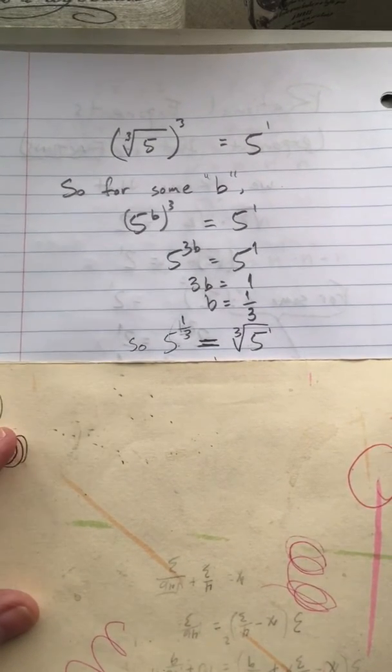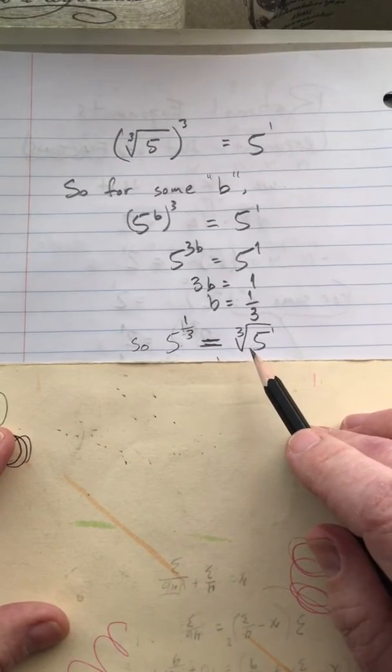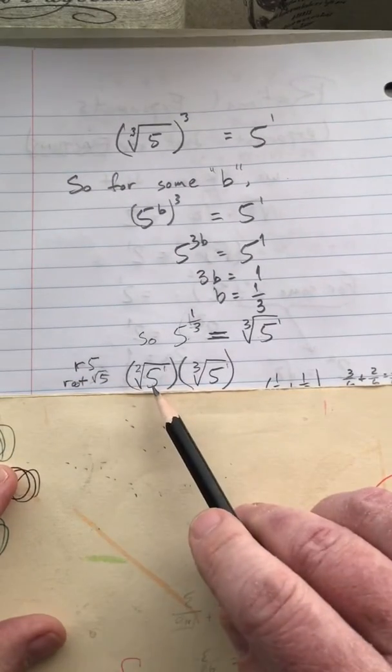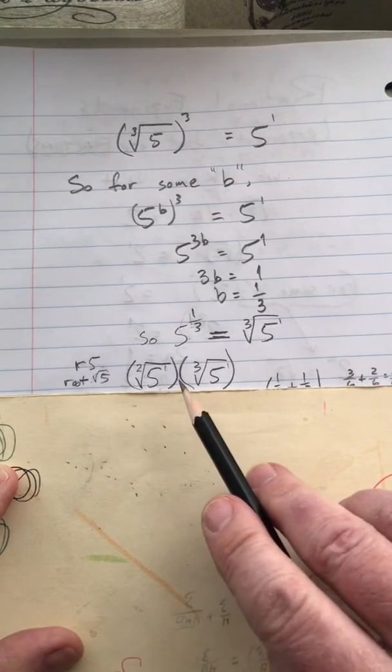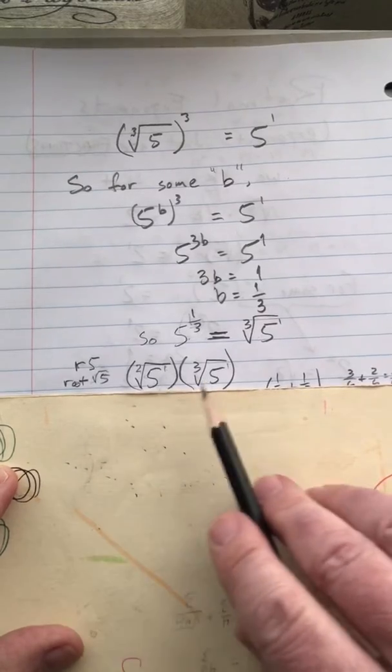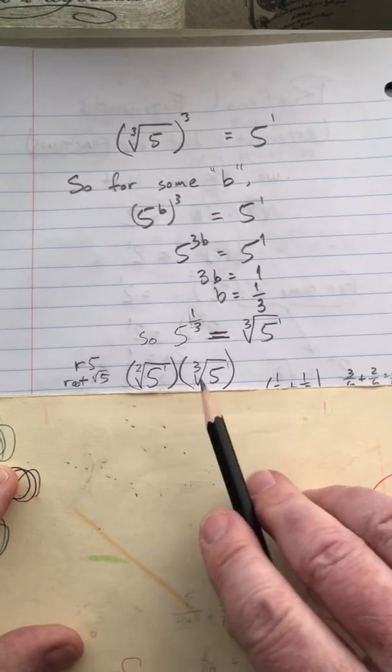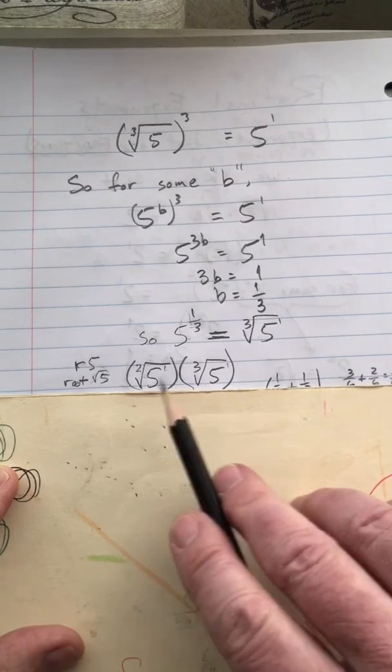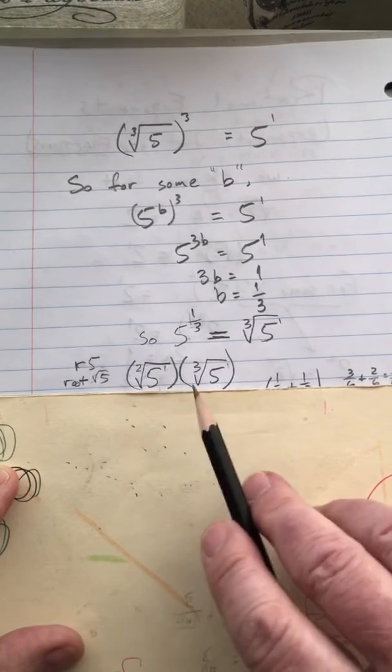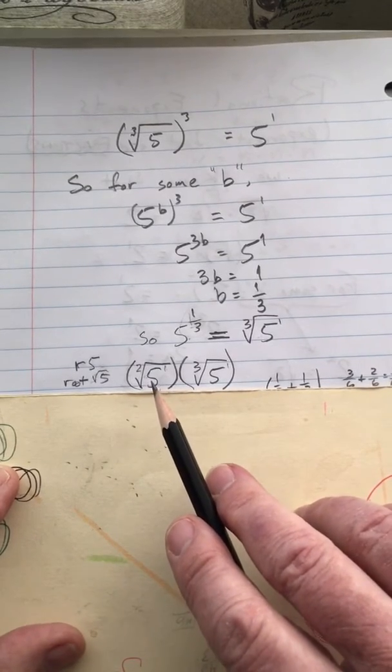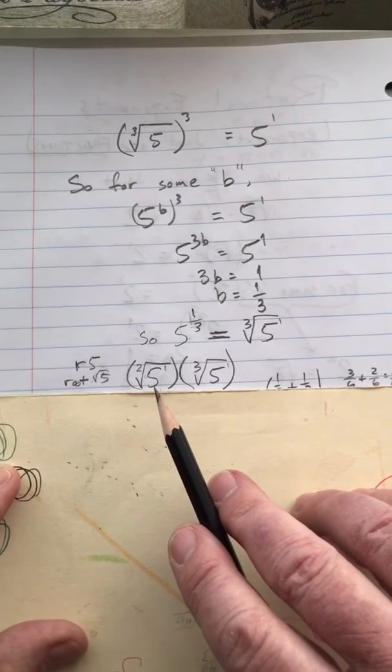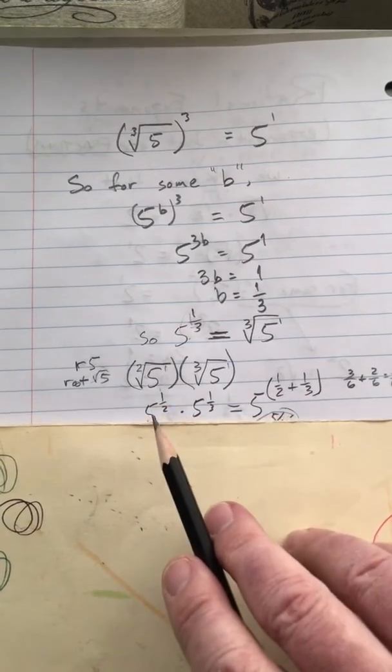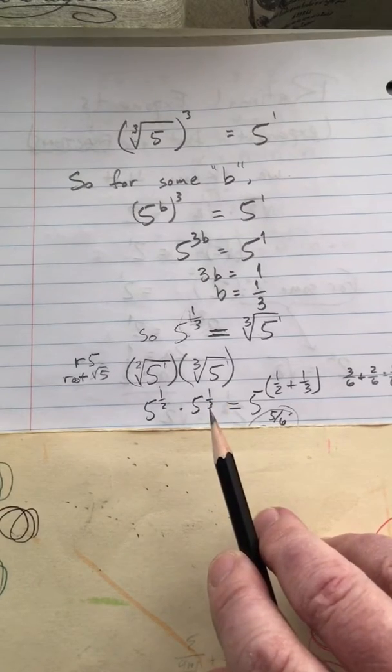So, here's an example of why you might want to have an alternate way of writing something like the cube root of 5 or some other root. So, let's say you wanted to multiply two different numbers, the square root of 5 times the cube root of 5. What if you wanted to multiply those two things together to figure out what that equals? Well, when you're writing these in radical form, it's really not very convenient to figure out how to do that. Since the roots are different, I don't really have an easy way of simplifying this product.